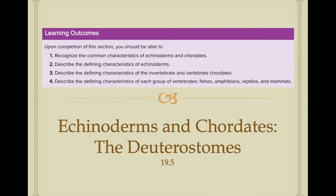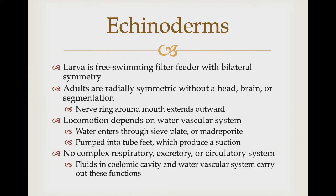That covers section 19.4, so let us jump into section 19.5, echinoderms and chordates. Those two groups are within the group the deuterostomes. Upon completion of this section, you should be able to recognize the common characteristics of echinoderms and chordates, describe the defining characteristics of echinoderms, describe the defining characteristics of the invertebrate and vertebrate chordates, and then describe the defining characteristics of each group of vertebrates — fish, amphibians, reptiles, and mammals.